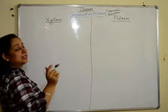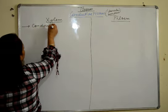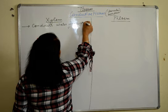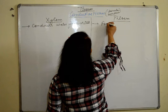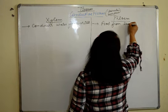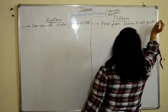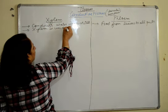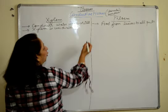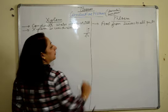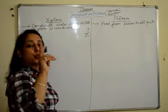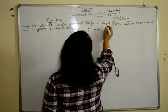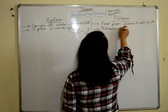There is one basic difference which we all know. Xylem conducts water from roots to all parts. Phloem conducts food from leaves to all parts. The second point is xylem is unidirectional — water will always flow from the roots upward. Xylem is always unidirectional; the flow of water in the xylem is always bottom to top.